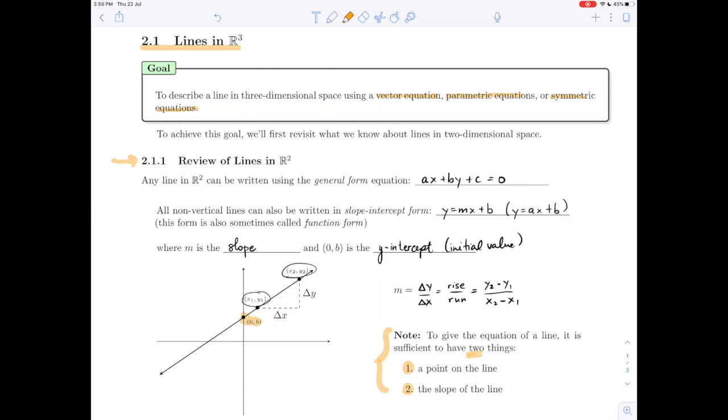When we go very shortly into giving the equation or equations of a line in R3, it is still going to be necessary to have two things. Those two things are going to change a little bit, but needing two geometric things to give the equation of a line will continue into three-dimensional space.